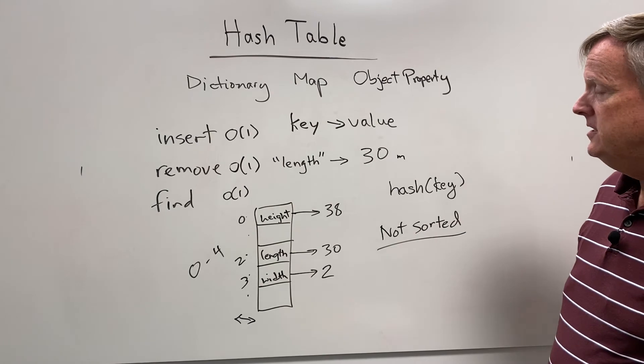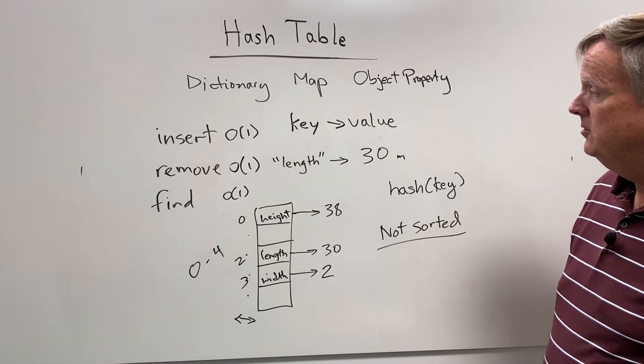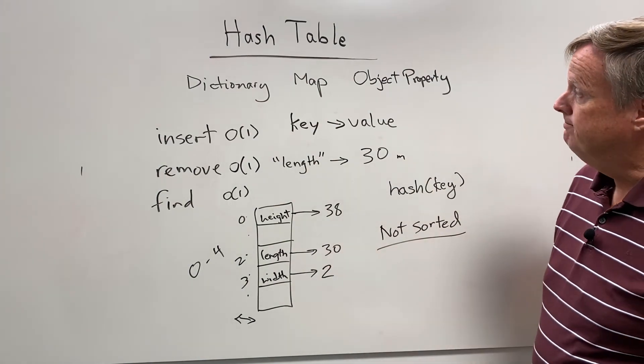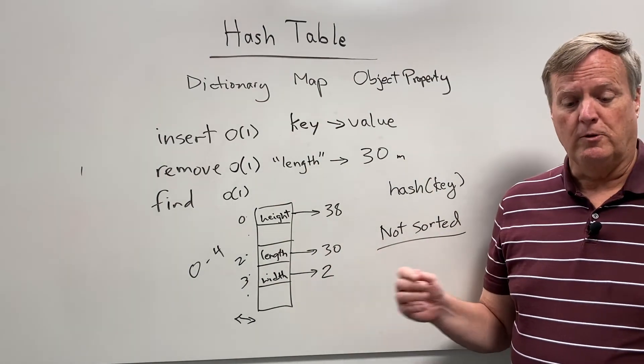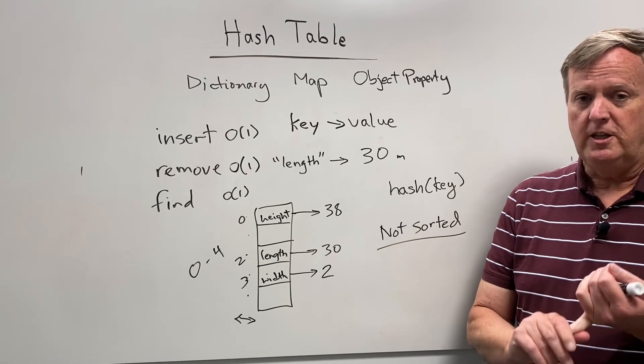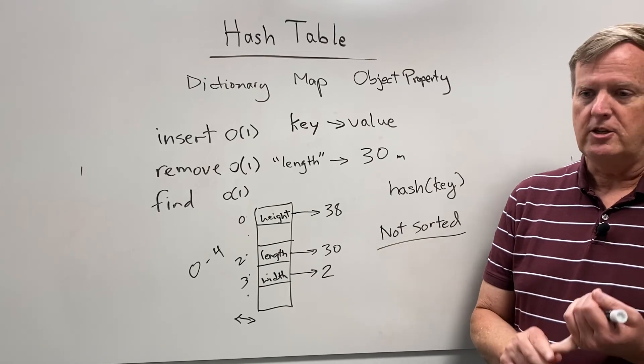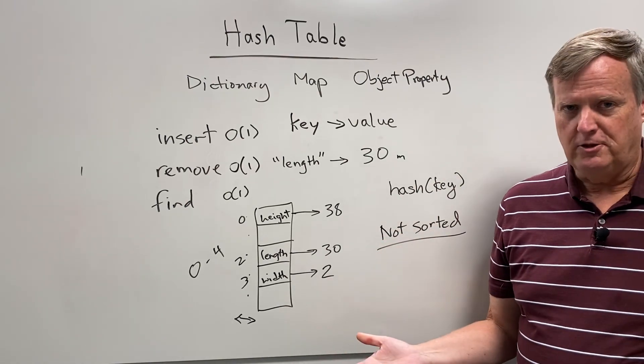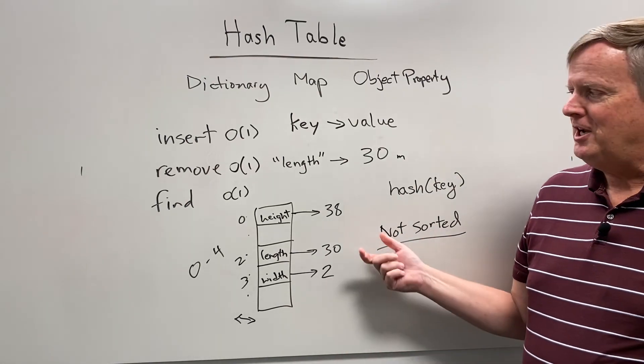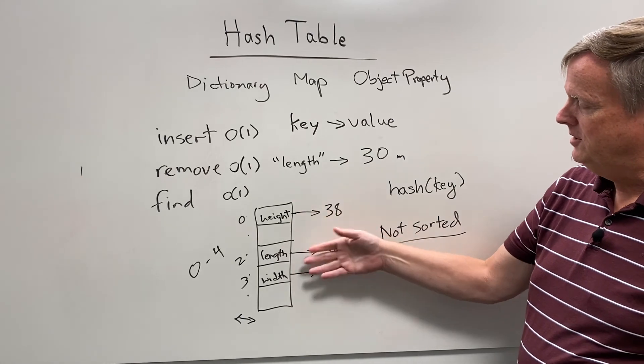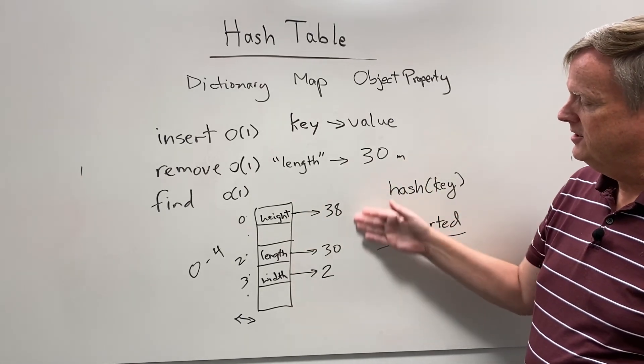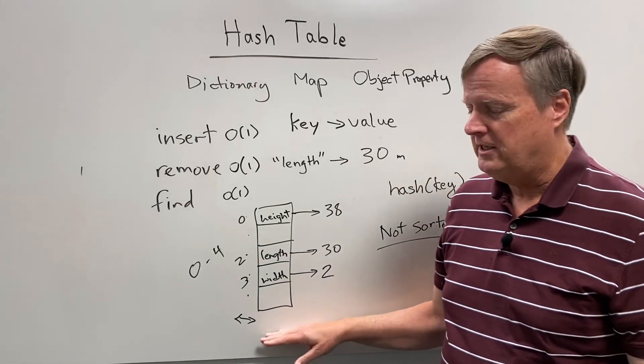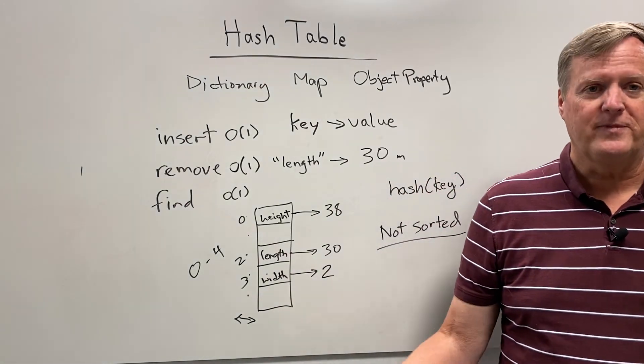And that's really the basics of a hash table and what you will need to know about hash tables for a technical interview. So remember, if you're dealing with key value pairs, you're going to think hash table. But if you need it sorted, you can't use a hash table for sorting it. Sometimes you'll use a hash table in conjunction with a binary search tree so that you can keep it sorted. That's getting into the more complex stuff. But from the basic level, that is how a hash table works. Thank you.